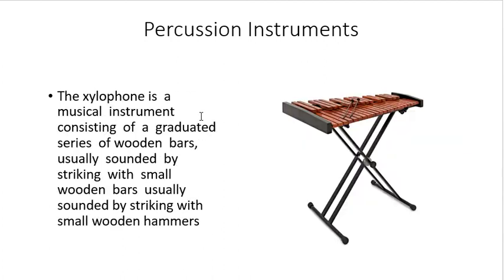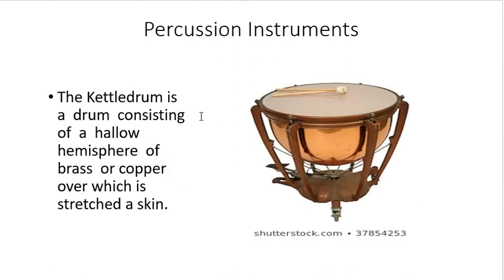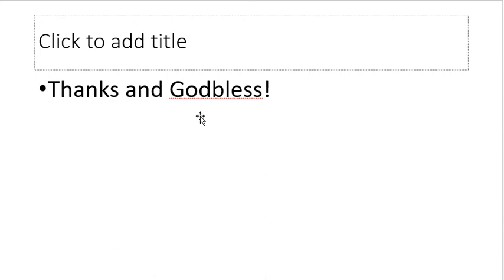Next is the xylophone — a musical instrument consisting of a graduated series of wooden bars, usually sounded by striking with small wooden hammers. It also has a set of octaves, similar in layout to the glockenspiel. We also have the kettle drum, which is very popular in China, Japan, and Korea. It consists of a hollow hemisphere of brass or copper over which a skin is stretched — commonly used as a drum by eastern peoples.